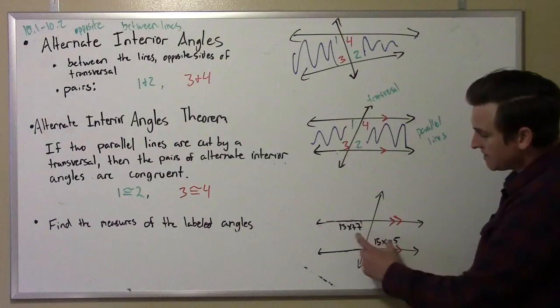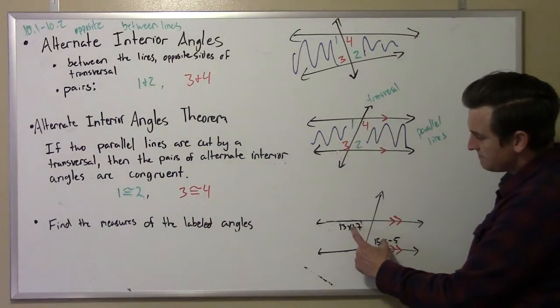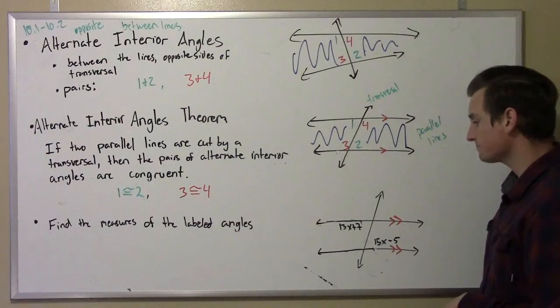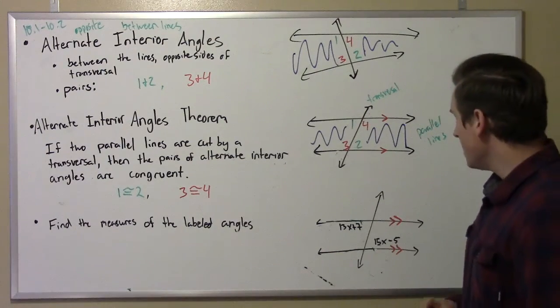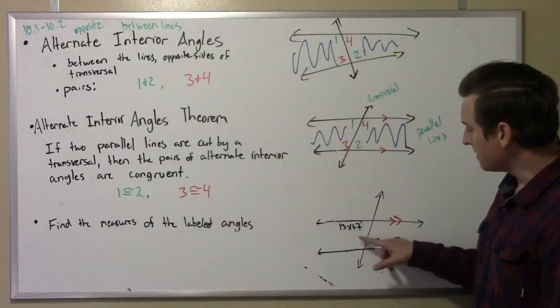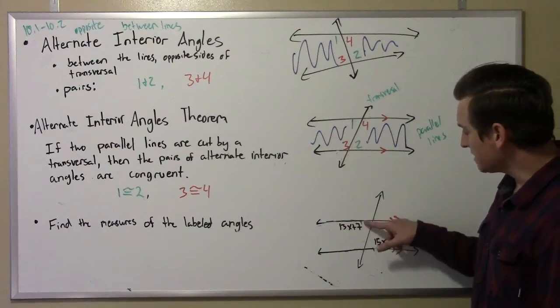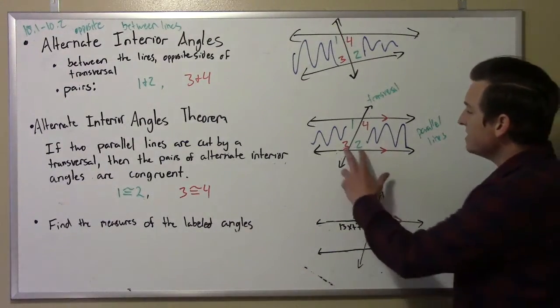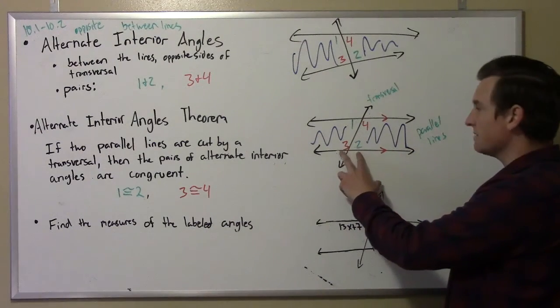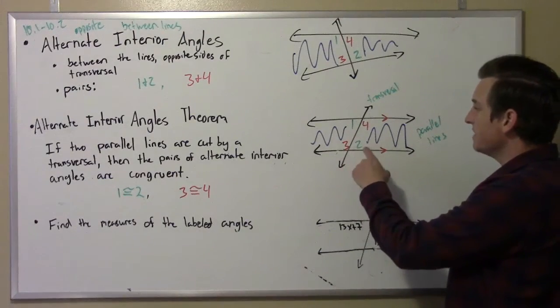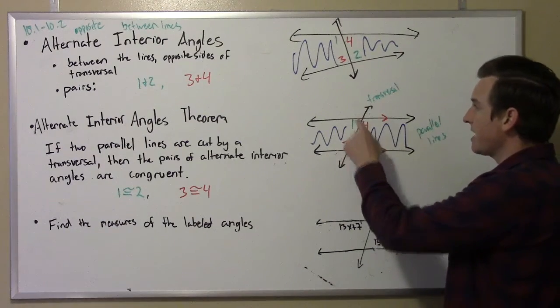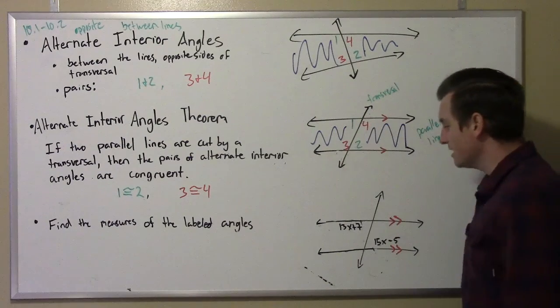They're on opposite sides of the transversal and interior, between the two lines. When I say opposite sides, it's not just left and right of the transversal, but kitty corner from each other - one on the top line and one on the bottom line, not these supplementary angles.